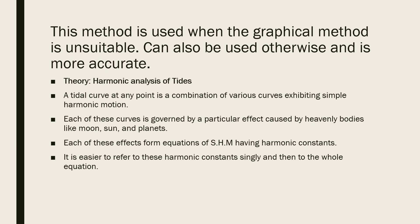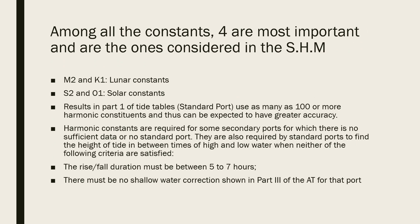Among all these constants, four are the most important ones and they are the ones which are considered in simple harmonic motion. If you see the practical calculation of the tide, you will see that we use these constants: M2, S2, K1, and O1. The M2 and K1 refer to the lunar constants, and the S2 and O1 refer to the solar constants.